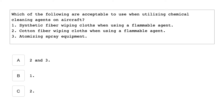Which of the following are acceptable when utilizing chemical cleaning agents on aircraft? One: synthetic fiber wiping cloths when using a flammable agent. Two: cotton fiber wiping cloths when using a flammable agent. Three: atomizing spray equipment. The acceptable answers are two — cotton fiber wiping cloths when using a flammable agent — and three — atomizing spray equipment.